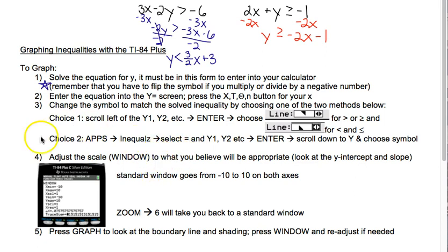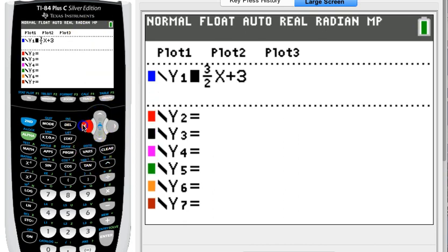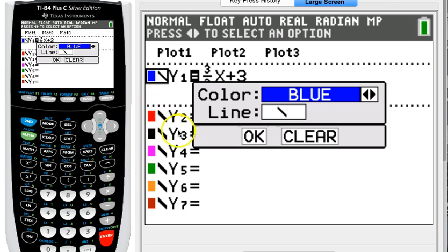I'm going to show you choice one here. So we're going to scroll to the left of our y1, y2, whatever slot in our y= screen we are using, and we're going to press enter once we're there. And then we're going to choose one of these based on what symbol we have. In this first one I have a less than symbol, so I'm going to choose my line to be this shaded lower half plane. Less than, lower, is kind of how I remember it.